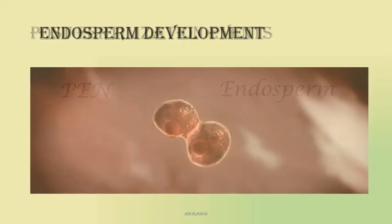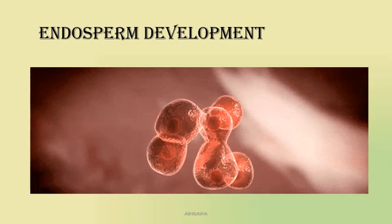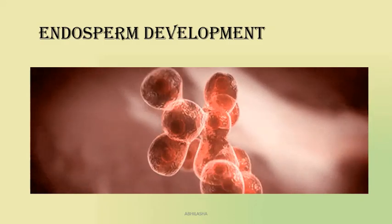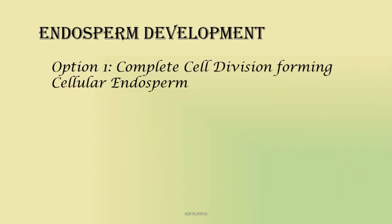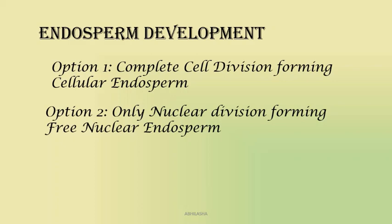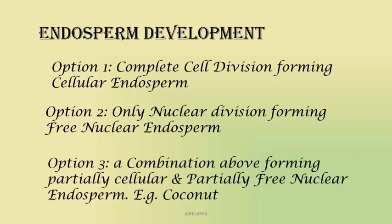Now let's see how endosperm develops. The primary endosperm cell divides continuously and repeatedly, but there are options. First option: the cell divides — both nuclear division and cytoplasm division occur. Second option: only the nucleus divides, that is free nuclear division — this is the most common type. Third option: a combination of the above two occurs.